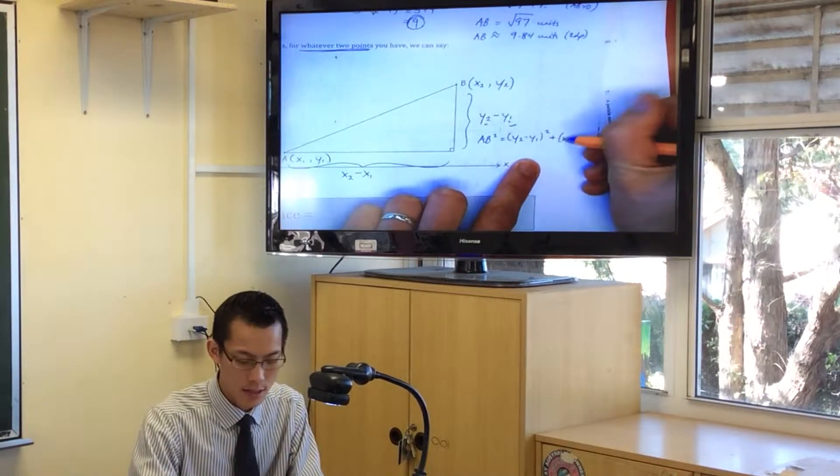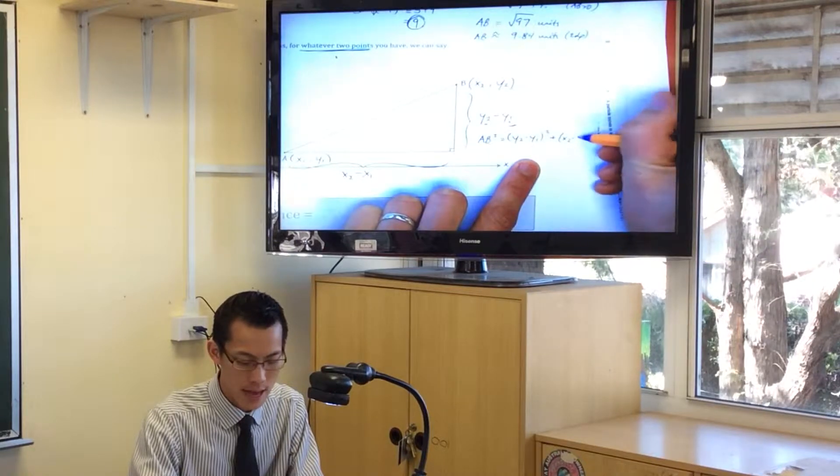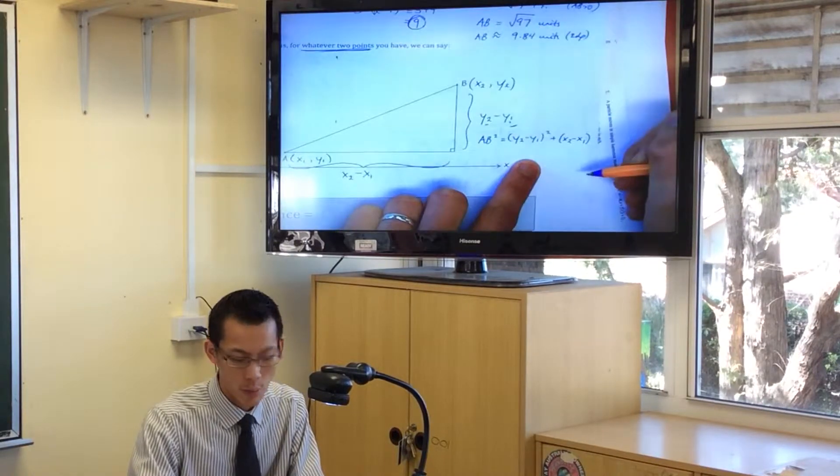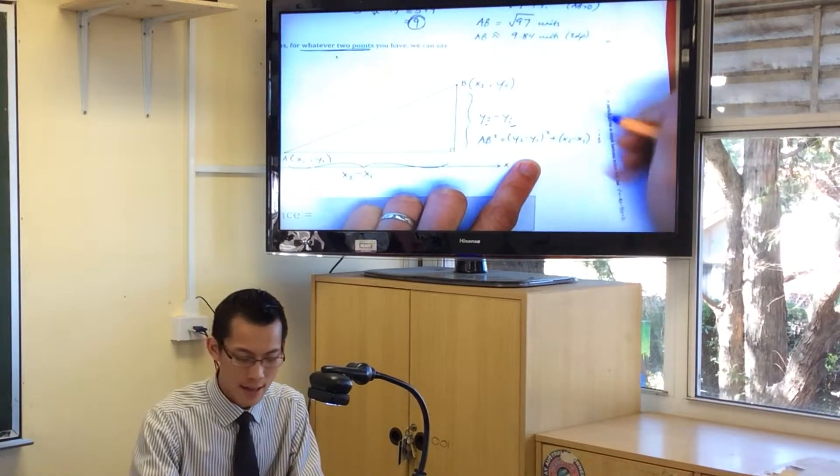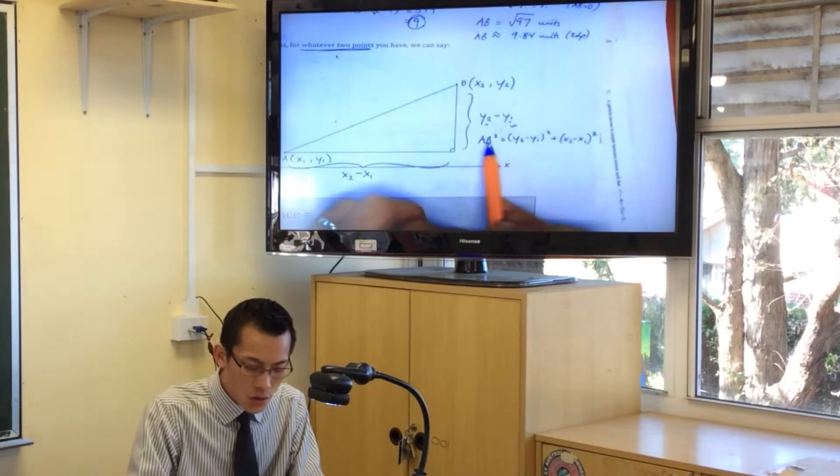So there's this one, and then I add on. I'd do the same thing for the x's, right? x2 minus x1. We worked out what that was. It was a number, and then you square it.